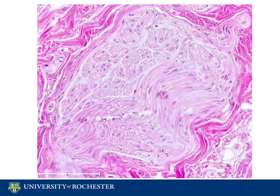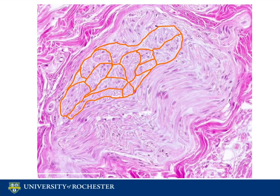Taking a closer look reveals that the neurons contained inside the epineurium are further grouped into even smaller bundles, known as fascicles. These fascicles are surrounded by another connective tissue covering called the perineurium.